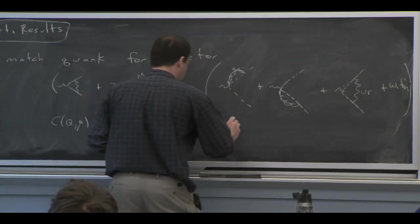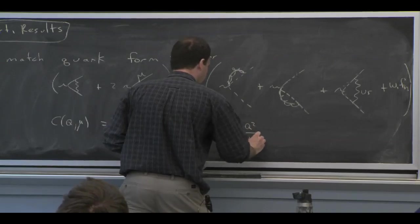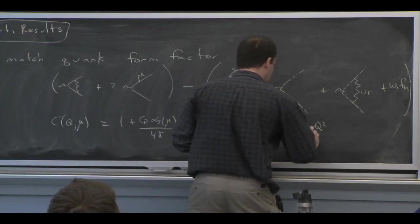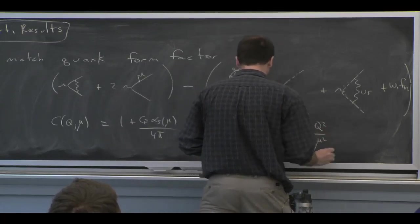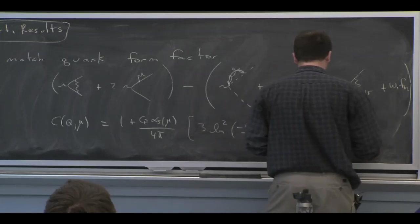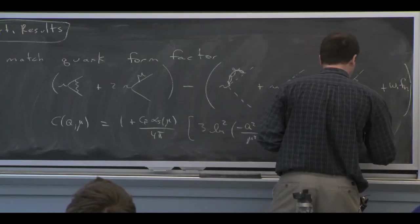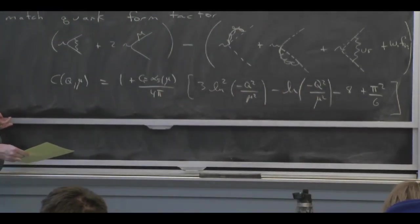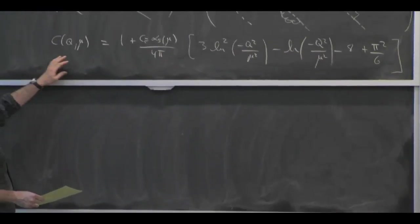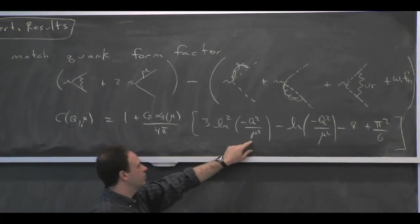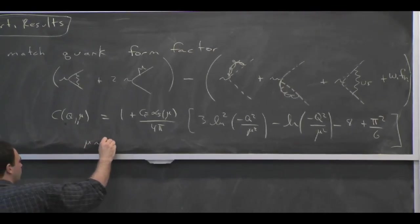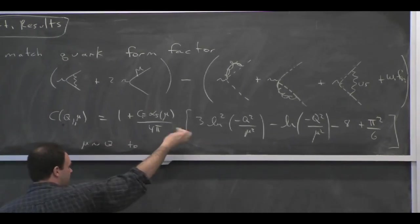So this is very analogous to the example that we did when we were doing a heavy light current. And you see here that this thing, which depends on mu, it's mu over Q, right? And that's what I was saying, that the Wilson coefficient or the hard function, the log should be minimized for mu of order Q. And we see that by doing the calculation.